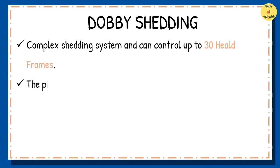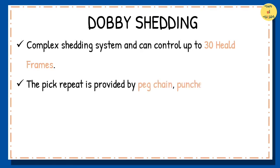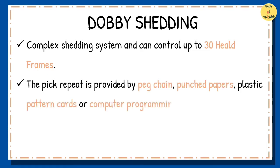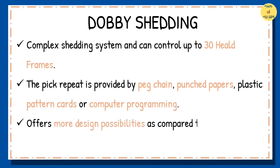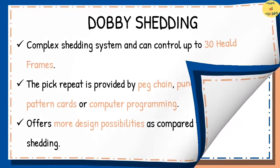Dobby is a relatively complex shedding system and can control up to 30 heald frames. The pick repeat in a dobby system is provided by peg chain, punched papers, plastic pattern cards, or computer programming, and is unlimited. This system offers more design possibilities as compared to tappet shedding.